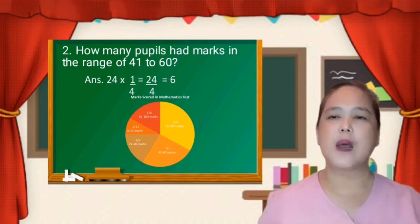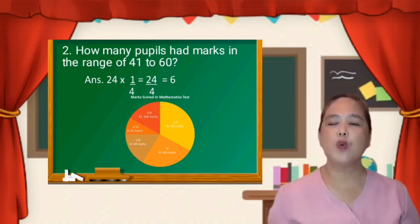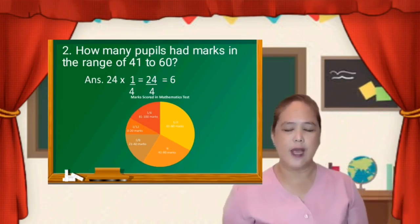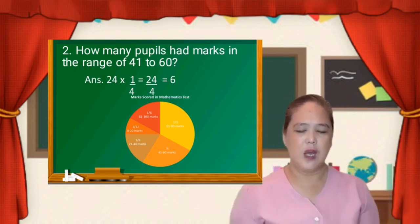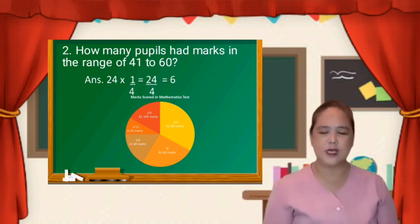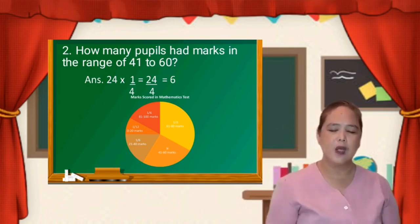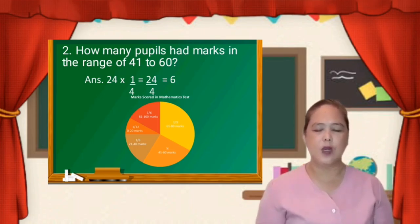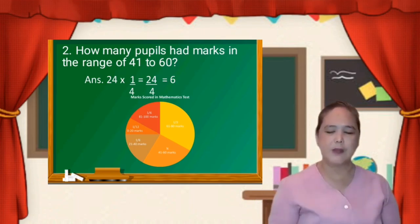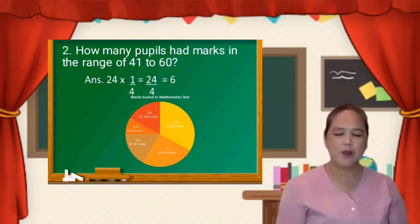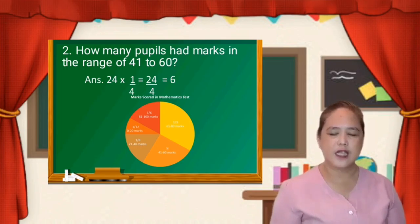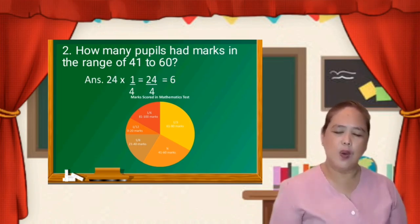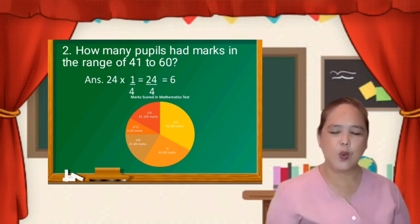For number two, how many pupils had marks in the range of 41 to 60? Looking at the pie graph, we have 1/4 for the range of 41 to 60. So multiply it again by 24. So 24 times 1 is equal to 24, then copy the denominator. So 24 over 4 is equal to 6. Meaning to say, there are 6 pupils who had the range of 41 to 60.